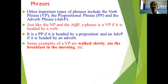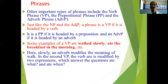For example, in the phrase 'the green shirt,' green is the head word, which is a noun, so we call it a noun phrase. Similarly, examples of verb phrases are 'walked slowly' and 'ate the breakfast in the morning.' In these, walked and ate are the verbs — the head words of those verb phrases.